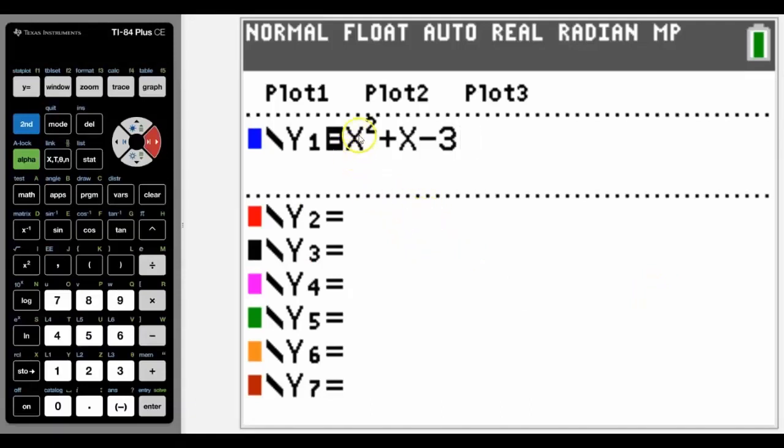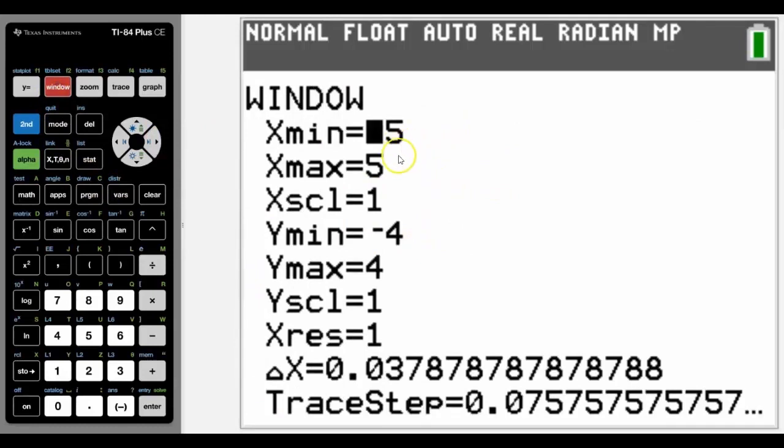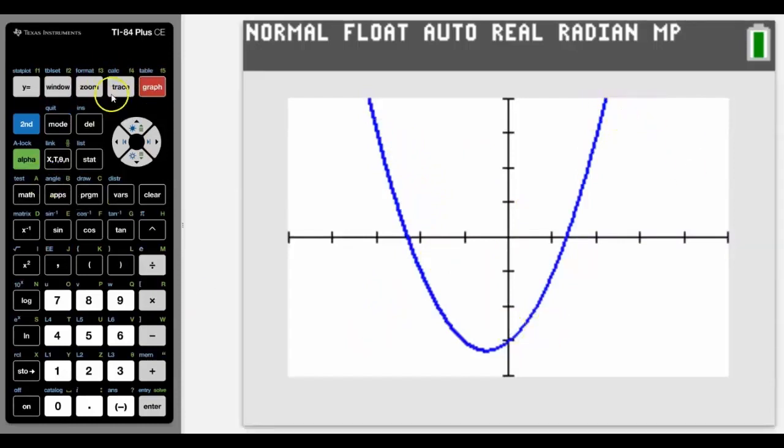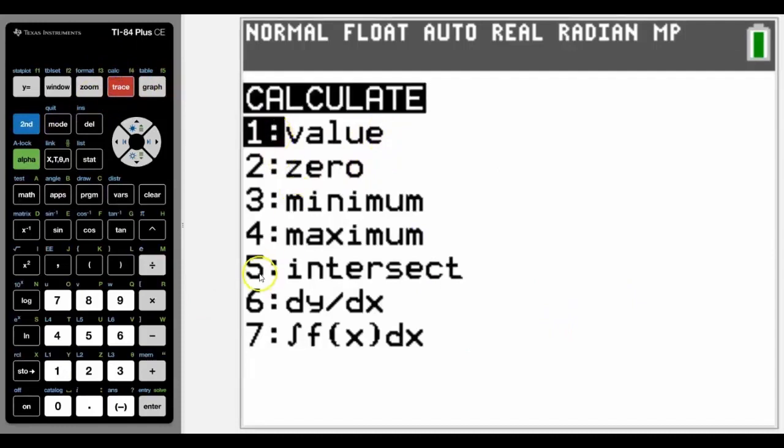For this lesson we're going to look at this quadratic x squared plus x minus 3 and I've adjusted the window slightly from the regular negative 10 to 10 just so we get a nice view of this quadratic. As I said we're focusing on the calc option which is above trace in blue and options 1 to 5.